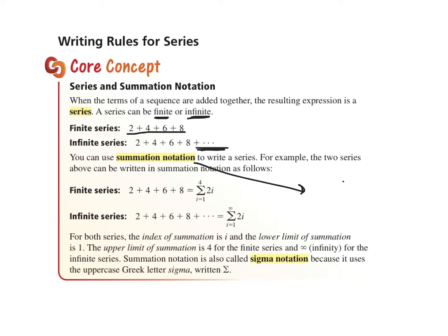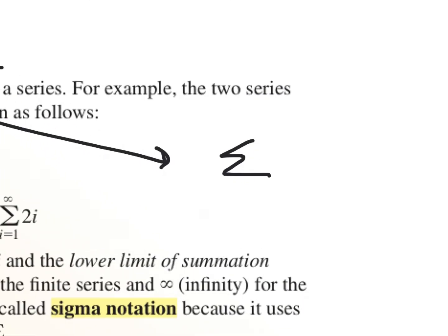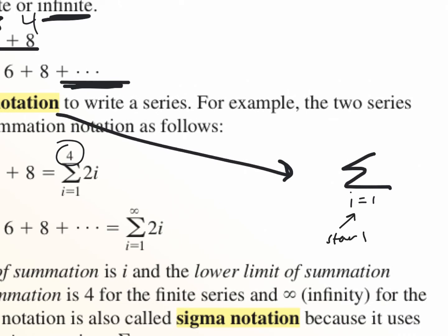Our summation notation uses a symbol called a sigma — it looks like the letter E. On the bottom is our starting point, so we always have something like i equals 1 or whatever number we start at. On the top is our ending point. Here we have 4 because we have 4 numbers: 1, 2, 3, 4 — so our ending point is the 4th term. Then we write our equation there. When there's no end, we put infinity up at the top because it keeps going forever.